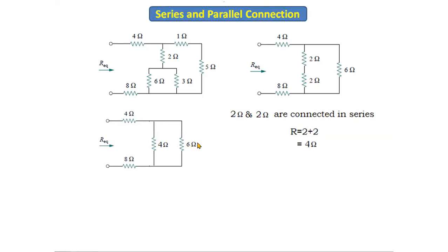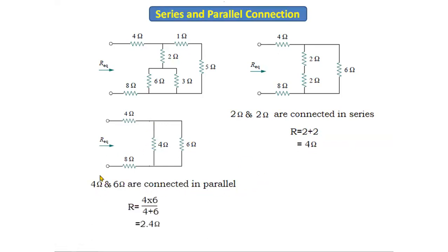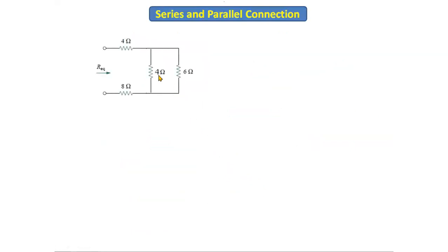The 4 ohm resistor and 6 ohm resistor are connected in parallel because the current is dividing here. Using the parallel formula R = (R1 × R2) / (R1 + R2), we get (4 × 6) / (4 + 6) = 2.4 ohms. We replace the 4 ohm and 6 ohm with 2.4 ohms.